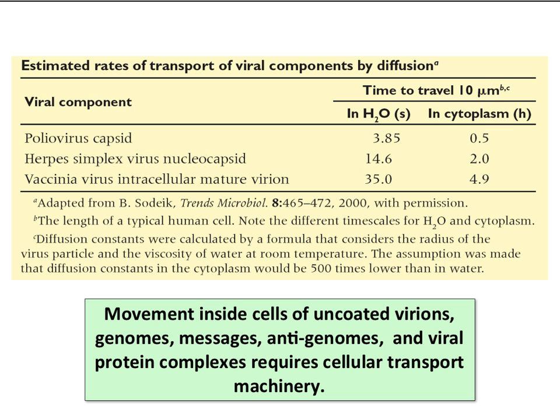Here's a thought experiment to make this point — these are estimated rates of transport of viruses either in water or the cytoplasm. The poliovirus capsid: time to travel 10 microns in water is 3.85 seconds; in the cytoplasm, applying a viscosity factor, it would take half an hour to move just 10 microns. Herpes virus would take about 14 seconds to move 10 microns in water but 2 hours to move in the cytoplasm. Vaccinia would take 5 hours just by diffusion. The point: viruses don't diffuse — they are actively transported along cellular pathways.